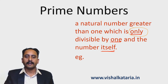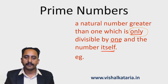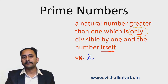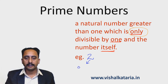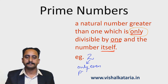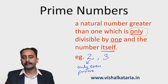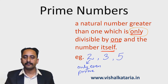The first prime number is 2, because 2 is divisible by 1 and 2 only. Moreover, 2 is the only even prime number. The next prime number is 3, because 3 is divisible by 1 and 3 only — it has no other factor. Next prime number is 5, and 5 is divisible by 1 and 5 only — no other factor.